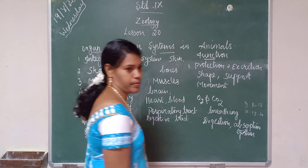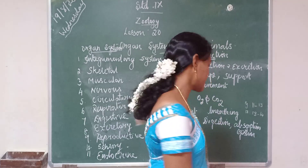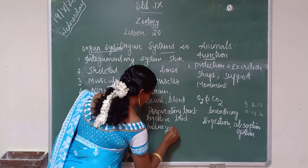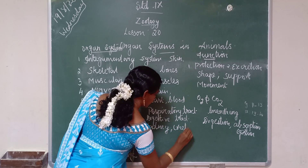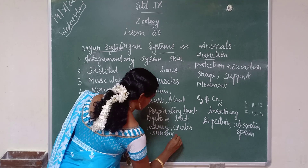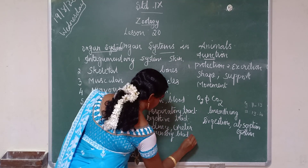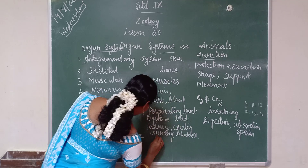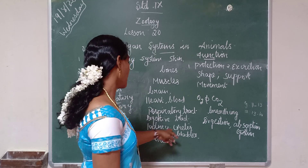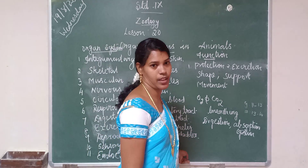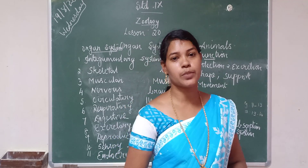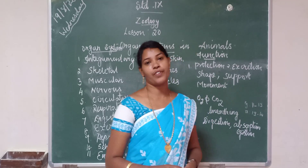The next one is the excretory system. The organs are kidney, ureter, urinary bladder, and urethra. Its function is the removal of nitrogenous waste products.